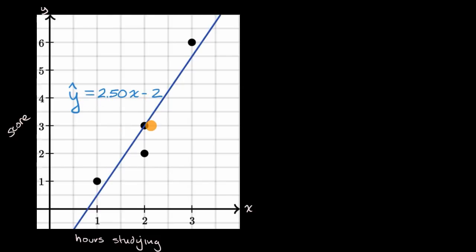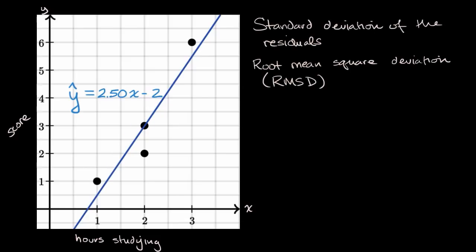Typically you would not do it by hand — we have computers for that. The way that we're going to measure how good a fit this regression line is to the data has several names. One name is the standard deviation of the residuals. Another name is the root mean square deviation, sometimes abbreviated RMSD.